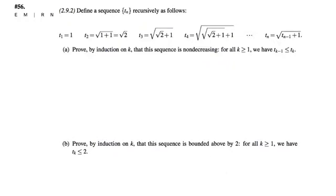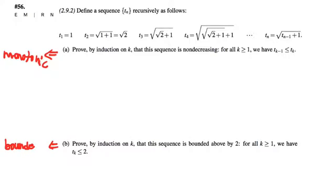Why is that enough? If the sequence is non-decreasing, it's monotonic, and it's also bounded — those two things together imply convergence. So part A will prove the sequence is monotonic, part B will prove it's bounded, and the monotone convergence theorem — probably the most celebrated result in the whole chapter — tells us that these two things together give us a convergent sequence.